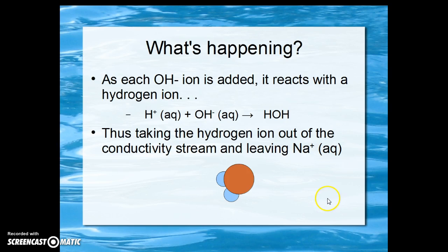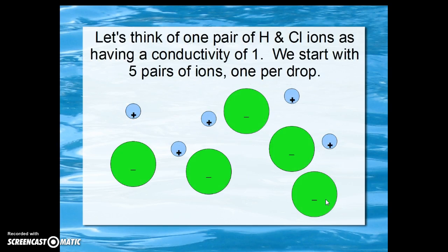This illustrates the reaction of the hydrogen ion and hydroxide ion to form water. Let's think of one pair of hydrogen and chloride ions as having a conductivity of one. We start with five pairs of ions, one per drop. Here are your hydrogen ions, here are your chlorides.